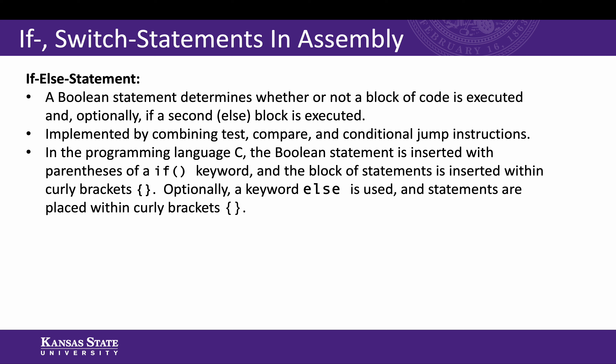I'm presuming that you have a background in programming in C, so maybe this is going to be a little bit of a review, but that's okay. A boolean statement determines whether or not a block of code is executed in an if statement, and optionally whether a second block of code is executed — which would be the else block. A boolean statement evaluates either true or false, so if that original statement is true the if block is executed; if it's false then the else block, if there is one, is executed. This is going to be implemented by combining test, compare, and conditional jump instructions, similar to what we did with the while loop and the for loop.